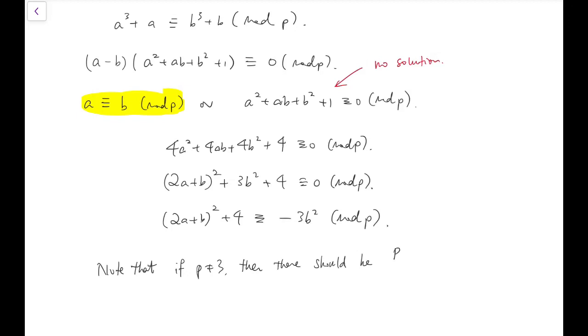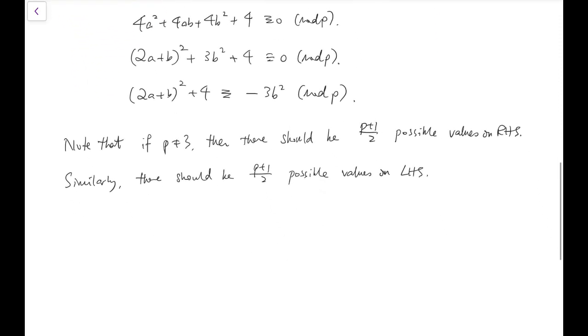Then there should be (p + 1)/2 possible values from our usual sense of quadratic residues on the right-hand side, and similarly, there should be (p + 1)/2 possible values on the left-hand side.